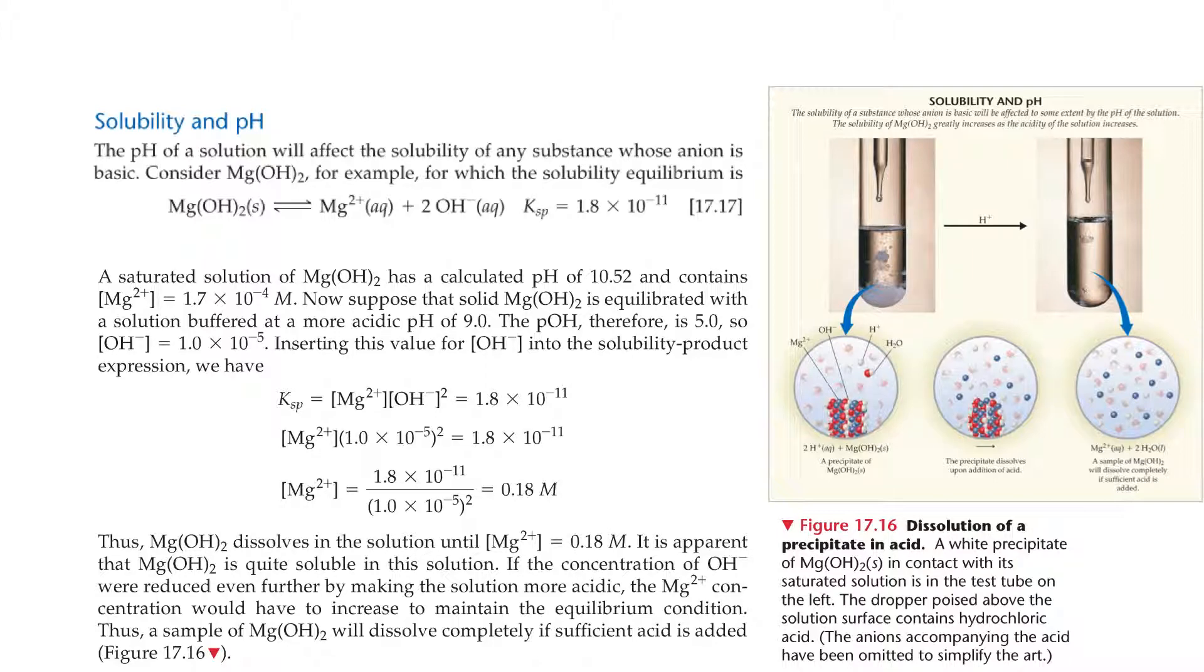Solubility and pH. The pH of a solution will affect the solubility of any substance whose anion is basic. Consider magnesium hydroxide, for example, for which the solubility equilibrium is: Mg(OH)2 ⇌ Mg²⁺ + 2OH⁻. A saturated solution of magnesium hydroxide has a calculated pH of 10.52 and contains a concentration of magnesium ion of 1.7 × 10⁻⁴ M. Now suppose that solid magnesium hydroxide is equilibrated with a solution buffered at a more acidic pH of 9. The pOH, therefore, is 5, so the hydroxide concentration is 1 × 10⁻⁵. Inserting this value for the concentration of hydroxide into the solubility product expression, we have the concentration of magnesium ion is 0.18 M.